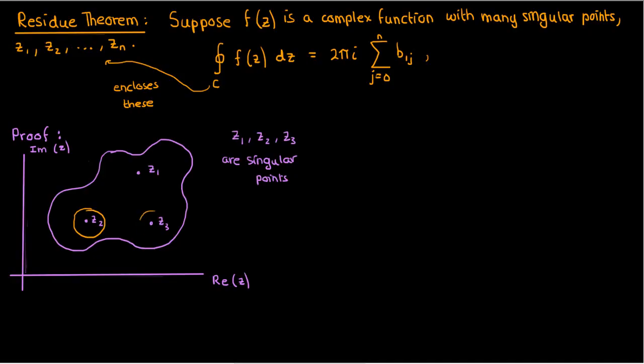Why? Well if I draw three really small circles over these singular points and make a bunch of small cuts at these circles, then since this resulting contour, I'll call it c1, doesn't enclose any singular points, its contour integral is zero thanks to Cauchy's theorem which we covered a couple of videos ago.